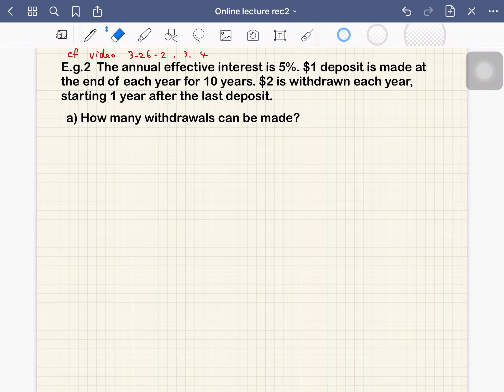$2 is withdrawn each year starting one year after the last deposit. So how many withdrawals can be made? The point is that each withdrawal is $2, but we cannot exhaust the fund with an integer number of $2 withdrawals, so the final payment may be larger or smaller. Think about the timeline of this question.